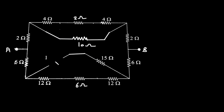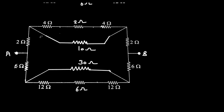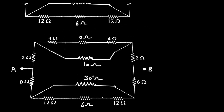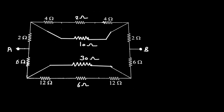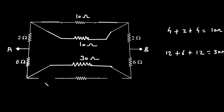And here this 15 ohm and 15 ohm gives 30 ohm. Now this 4 ohm, 2 ohm and 4 ohm are connected in series: 4 plus 2 plus 4 equals 10 ohm. Here also 12 ohm plus 6 ohm plus 12 ohm equals 30 ohm. So we can replace this by 30 ohm.